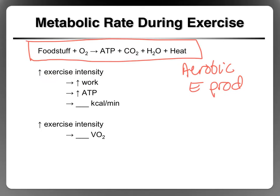As exercise intensity increases, we do more work, and as we do more work, we need more ATP. And as we make and produce more ATP, we also produce more heat, which is measured in calories. So as intensity increases, we produce more heat — another way of saying that is we burn more calories per minute. At the same time, we use more oxygen, because we're sending more hydrogen and electron pairs to the electron transport chain.